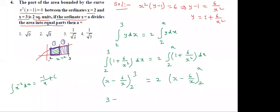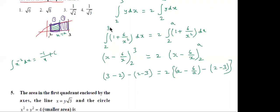Substitute upper limit 3: (3 − 6/3) = 3 − 2 = 1. Substitute lower limit 2: (2 − 6/2) = 2 − 3 = −1. So left side = 1 − (−1) = 2. Right side = 2 × [(A − 6/A) − (2 − 3)] = 2 × [(A² − 6)/A + 1].